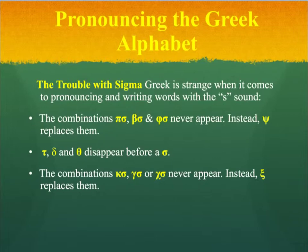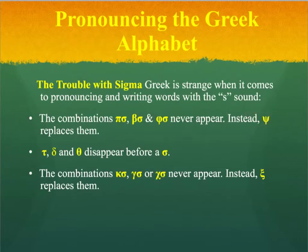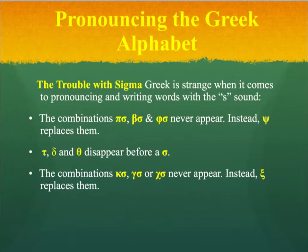Now we get a new set of consonants formed by combining these three basic sounds with the letter Sigma — a sibilant, or the Greek equivalent of our S. For the labials — Pi, Beta, and Phi — when combined with Sigma, you get the new letter Psi, pronounced PS. For the dentals, when combined with Sigma, they simply vanish and you're left with the Sigma. For the palatals — Kappa, Gamma, and Chi — combined with Sigma, they form the letter Xi, pronounced X.